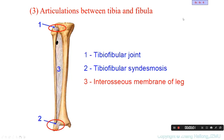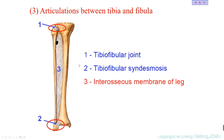Now let's study the articulation between the tibia and the fibula. It's very like the ulna and radius. There are three joints between them: the first is about the proximal part, another one is this part, and another one is between them.